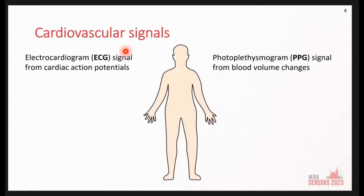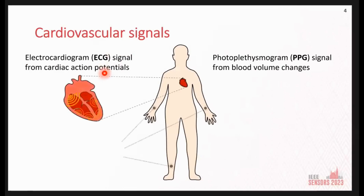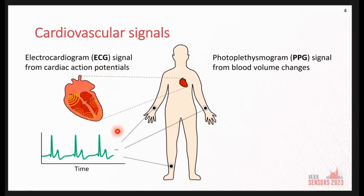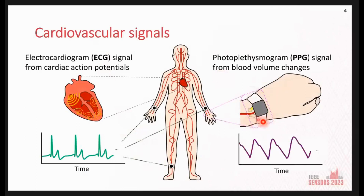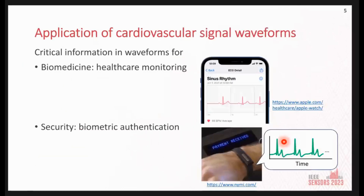There are several cardiovascular signals. For example, ECG — electrocardiogram signals — derived from cardiac action potentials can be recorded using multiple electrodes on the body. Additionally, PPG — photoplethysmogram signals — from blood volume changes can be recorded using an optical sensor in a smartwatch. These cardiovascular signals are used for several applications utilizing the critical information in the waveform.